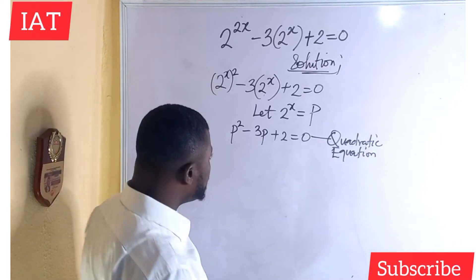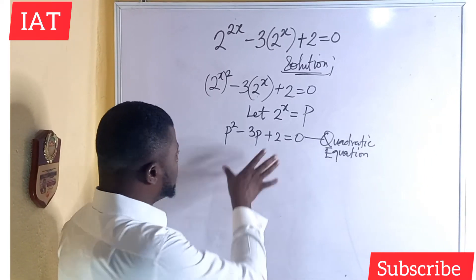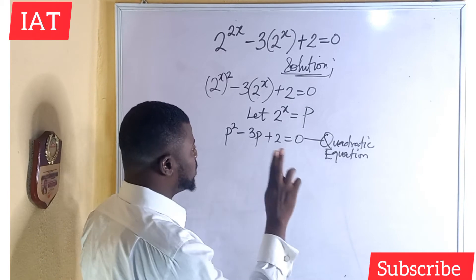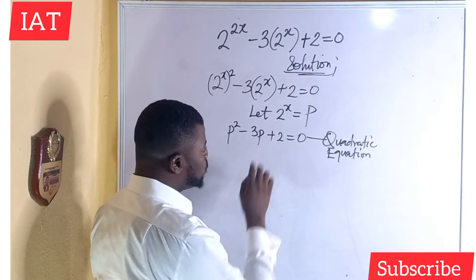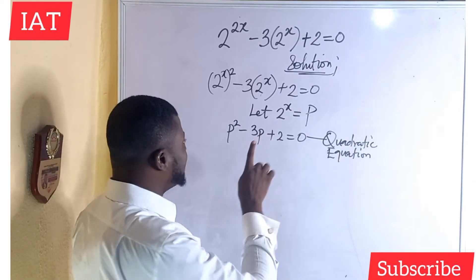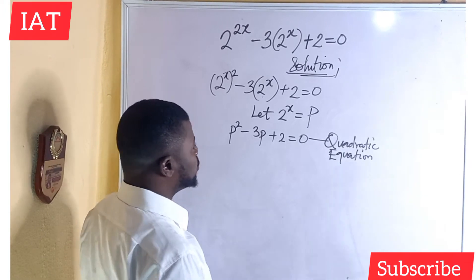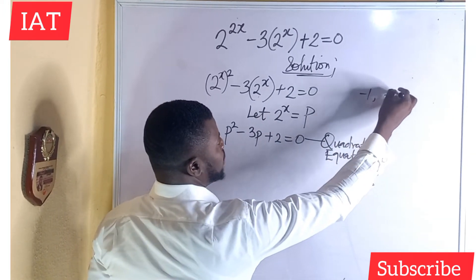So at this point, what we need to do is to check if it is factorizable. Think of two numbers such that when you multiply, it gives you plus 2 and when you add, it gives you minus 3. I think those numbers will be minus 1 and minus 2.